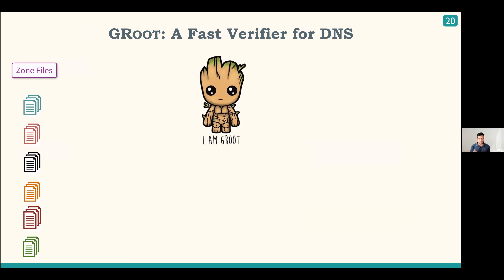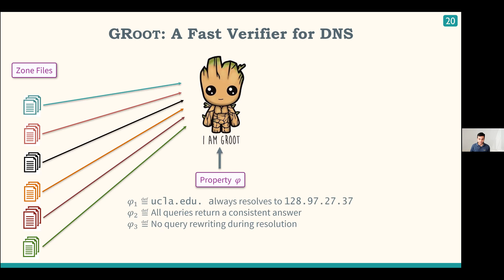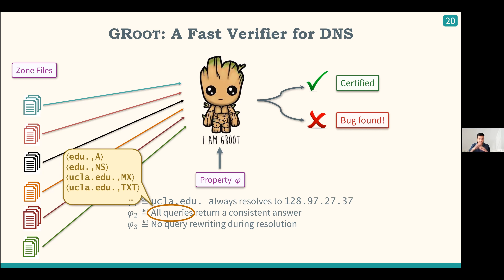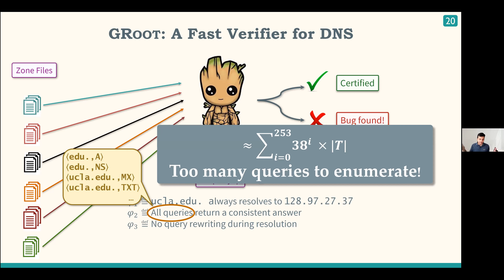In contrast, we built a tool called Groot that does proactive and exhaustive verification of the correctness of DNS zone files. Groot takes in a set of zone files from many different name servers, plus a specification of what the zone files should be doing, including user-defined properties. It either ensures those properties hold or gives counterexamples. The key challenge is that there are way too many queries to enumerate — a domain name can be up to 254 characters with 38 different character values, plus 60 record types — so we use symbolic representation to evaluate many queries at once.